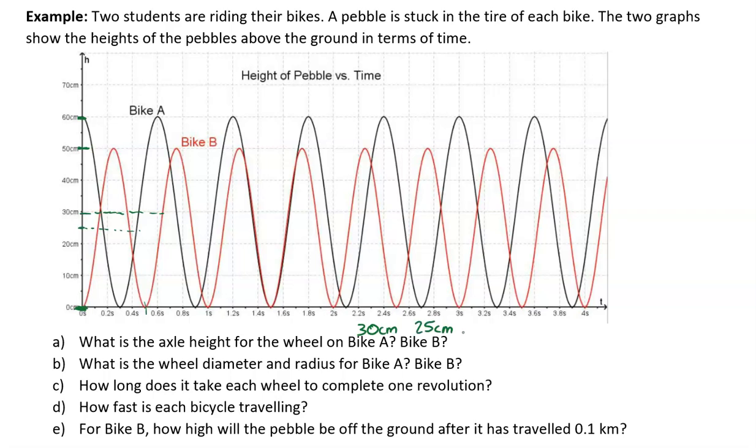Then it asks, what's the wheel diameter and radius for bike A and bike B? Well, hopefully you can see that it follows from what we just found. The amplitude of this wave is the radius of the wheel. So the amplitude equals the radius of the wheel. In the case of bike A, you can see that it's going from 30 up to 60, or you can think about it in terms of the fact that it's a 60 centimeter diameter and the radius is half of that. So on bike A, it's a 60 centimeter diameter with a 30 centimeter radius. And for bike B, the diameter is 50 centimeters with a radius of 25 centimeters.